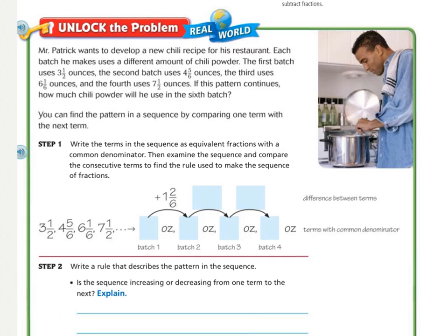So, this is what it looks like in a story problem. Mr. Patrick wants to develop a new chili recipe for his restaurant. But each batch he makes uses a different amount of chili powder. The first batch uses 3 1/2 ounces. The second batch uses 4 and 5/6 ounces. The third uses 6 and 1/6 ounces. And the fourth uses 7 1/2 ounces. If this pattern continues, how much chili will he use in the sixth batch? So, you can find the pattern in a sequence by comparing one term to the next. First, you need to press pause, underline what you're being asked to find, and circle the important information. Do that.